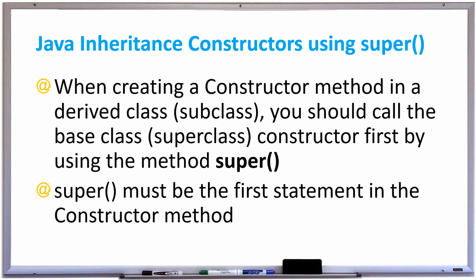In this video, we're going to learn how to create constructors in a subclass using the keyword super. When creating a constructor method in a derived class or subclass, it's a good idea to call the base class or super class constructor first by using the method super. The reason you should do that is because when you're inheriting a lot of fields that come from the super class, you want to make sure those fields are also initialized, and the best way to do that is to call the constructor of the super class.